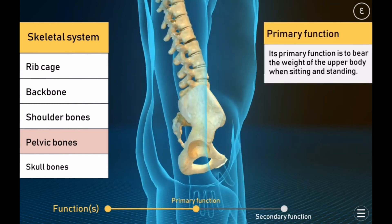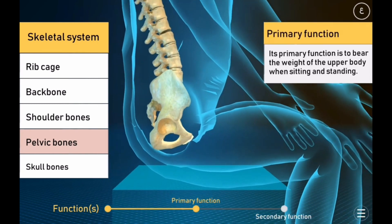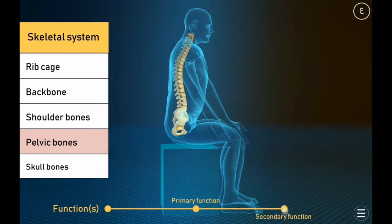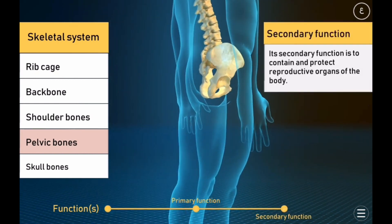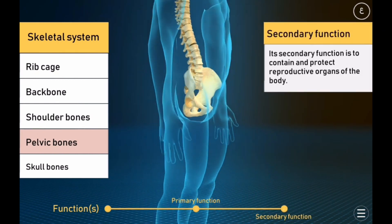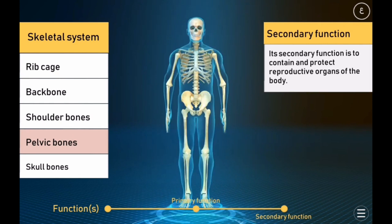The primary function of the pelvic bone is to bear the weight of the upper body when sitting and standing. Its secondary function is to contain and protect the reproductive organs of the body.